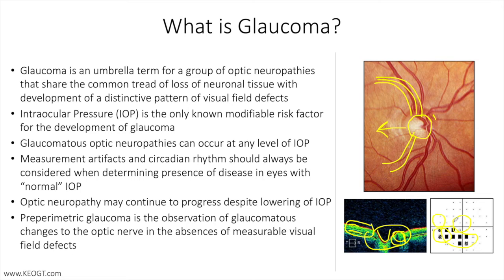We treat glaucoma with drops that decrease fluid production, like beta blockers and carbonic anhydrase inhibitors, or increase outflow of fluid from the eye, like prostaglandin analogs and Rho-kinase inhibitors. Our goal with treatment is to decrease pressure roughly by 25 to 30 percent from baseline as a simple rule.